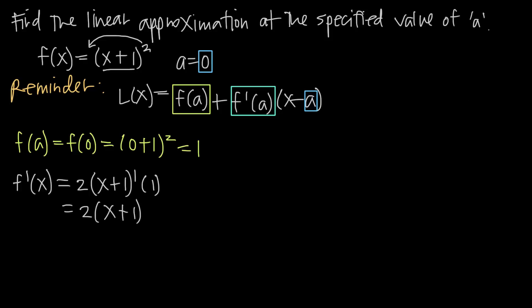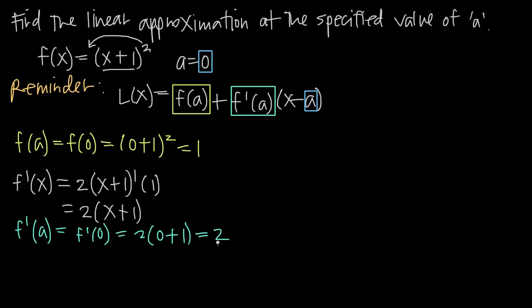Now in order to find f prime of a, we just plug a into this function for x. So f prime of a is the same as f prime of 0 since a is 0. We plug 0 in and get 2 times 0 plus 1. 0 plus 1 is 1, and 1 times 2 is 2. So the value there is 2, and we'll plug that in for f prime of a.